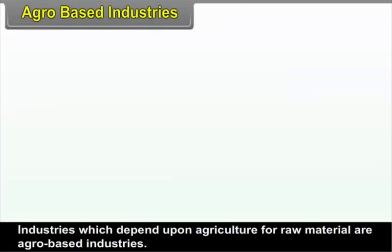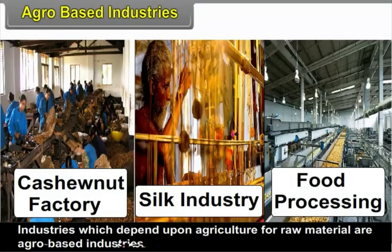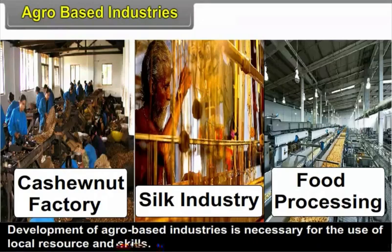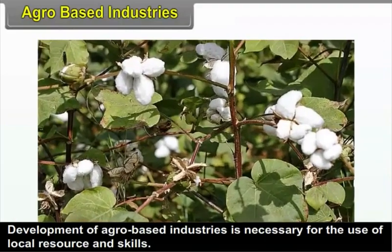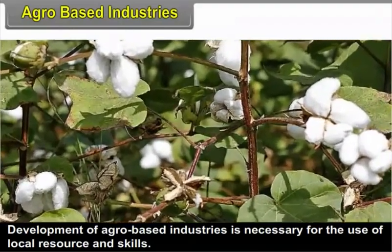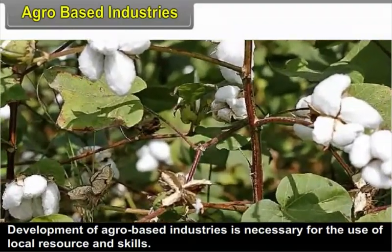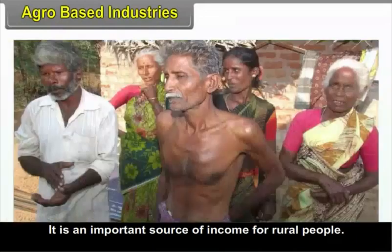3.5 Agro-Based Industries. Industries which depend upon agriculture for raw material are called agro-based industries. Development of agro-based industries is necessary for the use of local resources and skills. It is an important source of income for rural people.